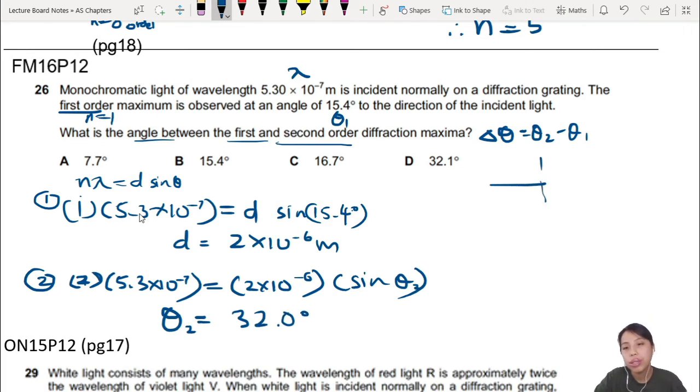So your light goes, splits, first order, second order. Maxima, so this one is, what is the angle? 15.4, this one is 32. 15.4.